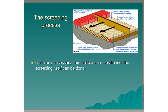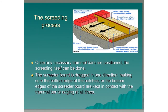The screeding process. Once any necessary trammel bars are positioned, the screeding itself can be done. The screeder board is dragged in one direction, making sure that the bottom edge of the screeder board is kept in contact with the trammel bar or the edging at all times.